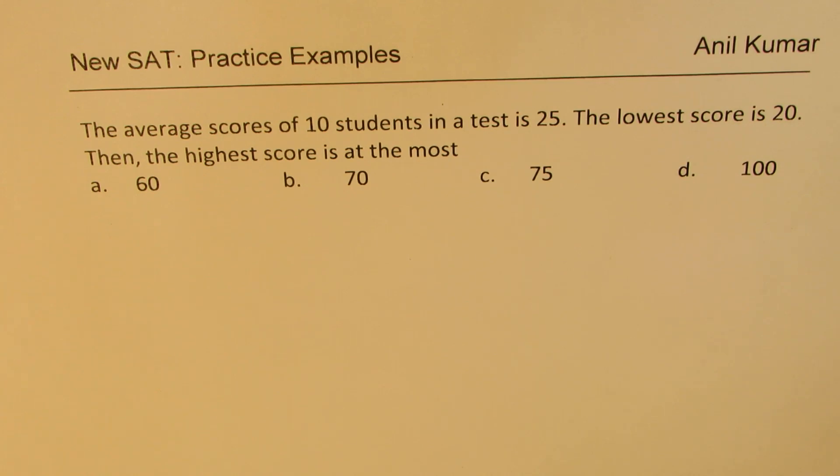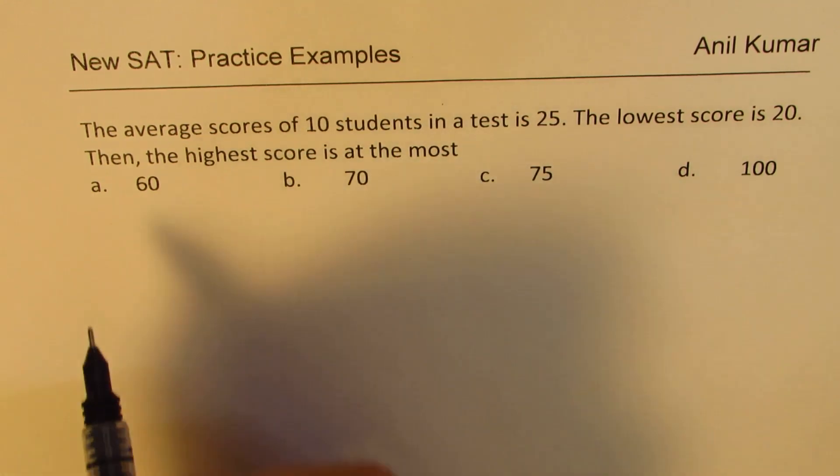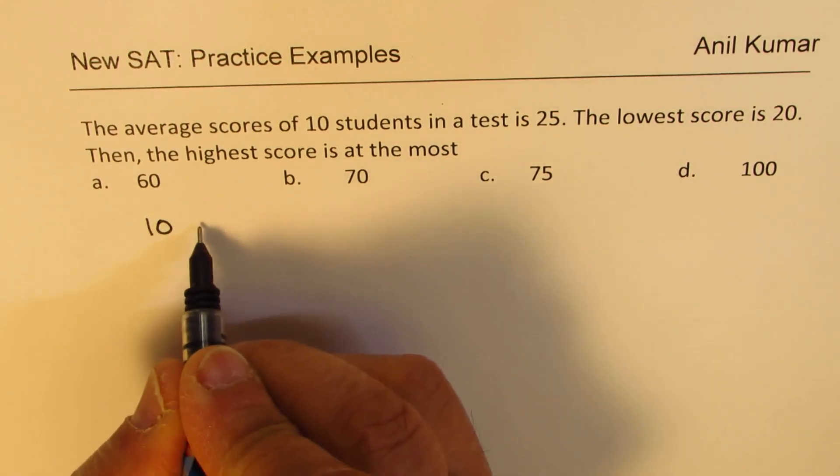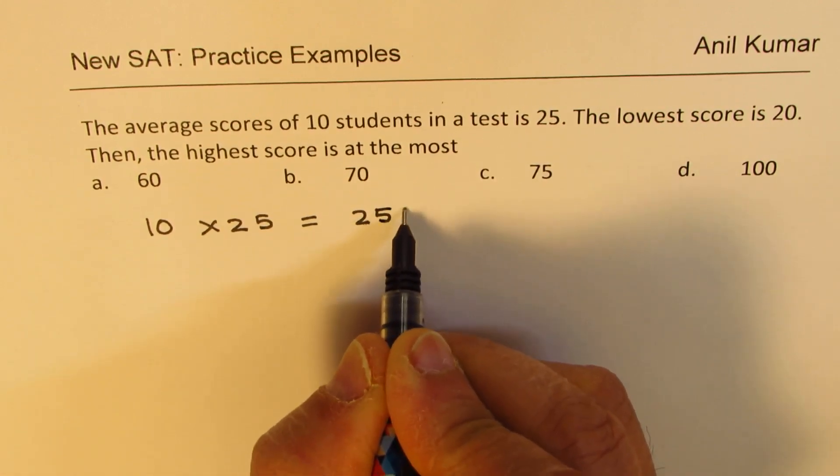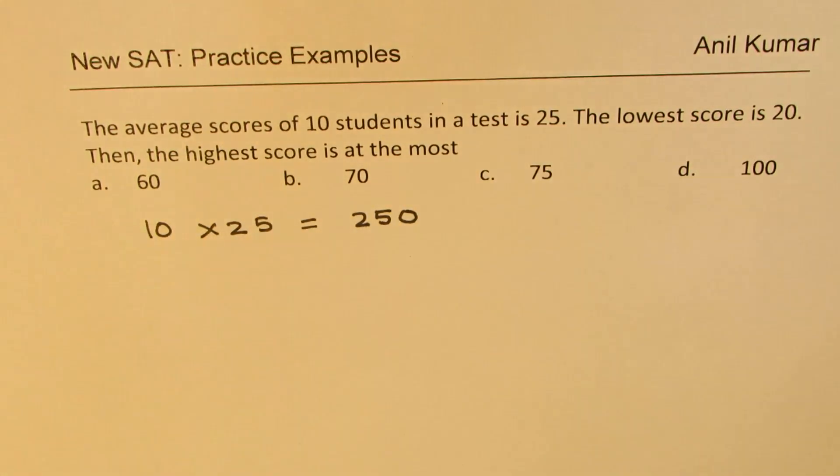The average scores of 10 students in a test is 25. That means 10 students' score is 25, so that gives you a total of 250. So let's understand the very first statement.